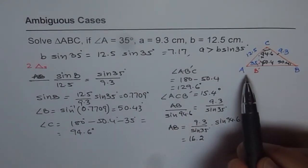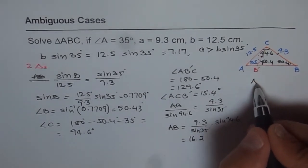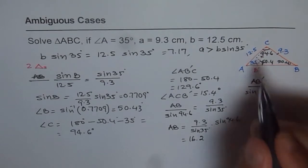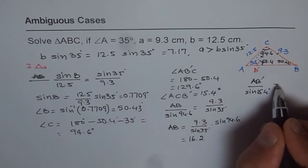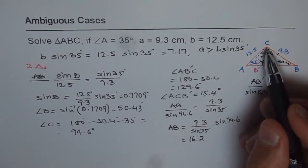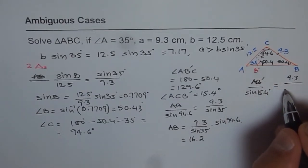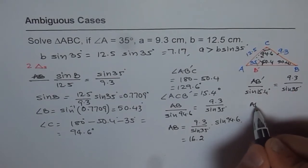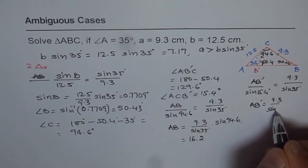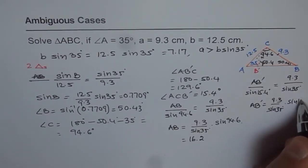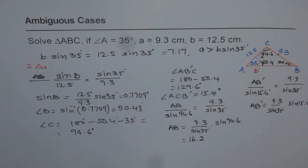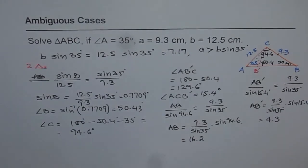Lastly, we find AB dash. AB dash over sine of 15.4 degrees equals 9.3 over sine of 35 degrees. From here AB dash equals 9.3 over sine of 35 degrees times sine of 15.4 degrees. Calculating: 9.3 divided by sine of 35 times sine of 15.4 gives us 4.3 centimeters.